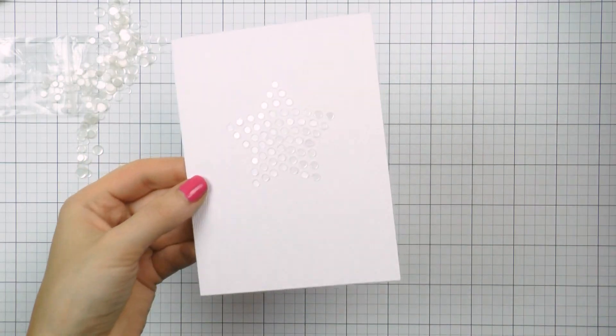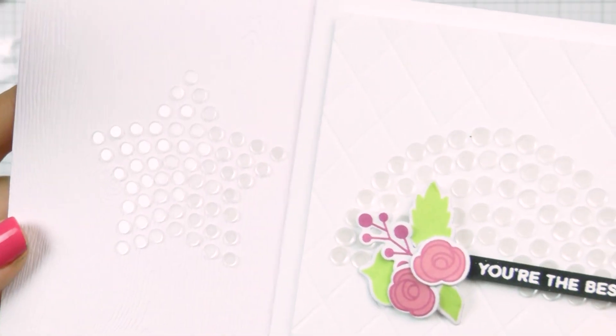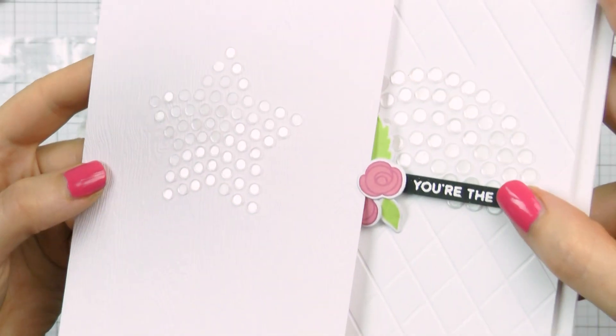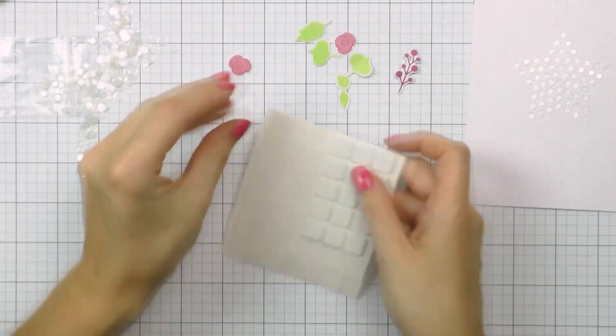So here is my shape all nice and completed. I love the way it turned out and this stamp set is actually quite addictive. I wanted to try every shape on every color of cardstock and use all of my sequin colors. Maybe one day I will.